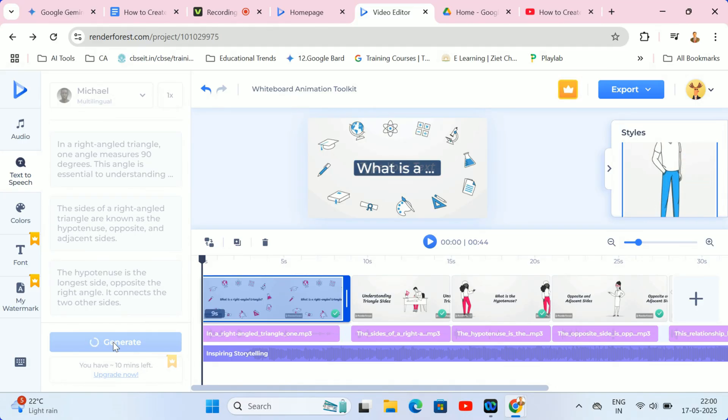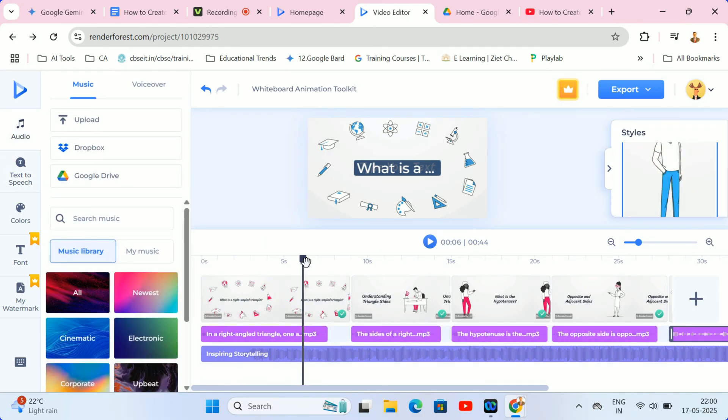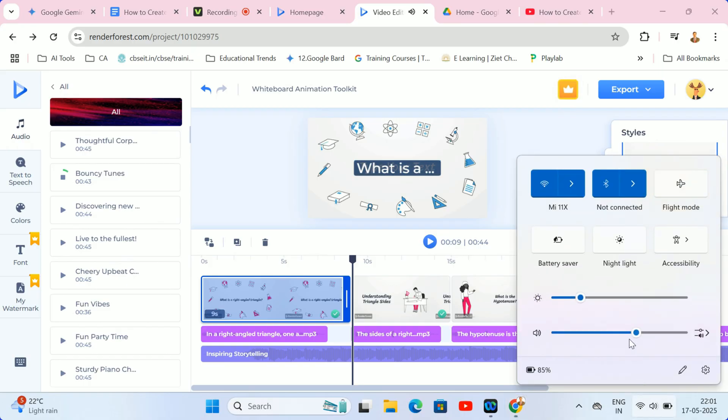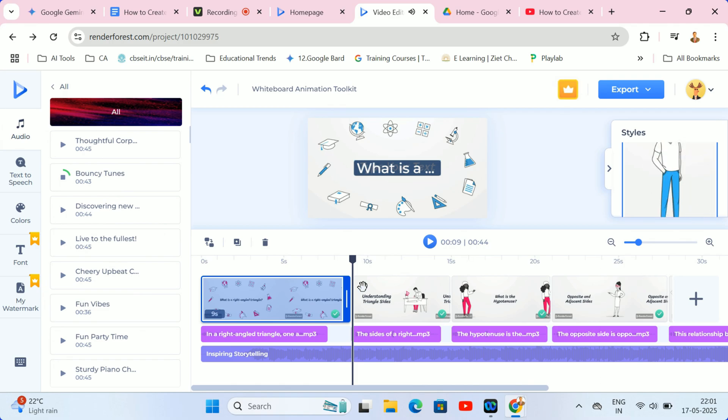With the narration in place, let's enhance the video with some background music. Renderforest provides a library of royalty-free music tracks. Simply select a track that suits the tone of your animation and then adjust the volume to ensure it complements the voiceover without overpowering it.